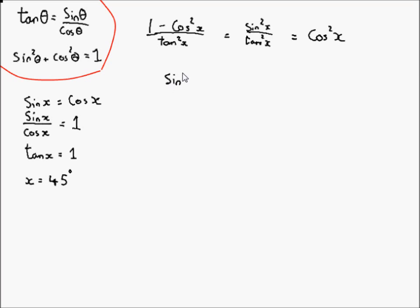So 1 minus sin squared x is equal to cos squared x.